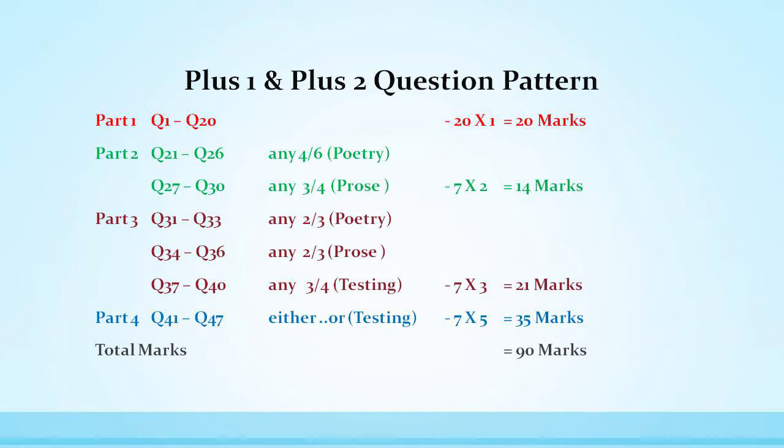Part 1, question 1 to question 20 which carries 1 mark each. Part 2, question 21 to question 30. You can answer 4 out of 6 for questions 21 to 26, and 3 out of 4 for questions 27 to 30. Totally 7 questions you have to answer in this part and each question carries 2 marks, therefore 14 marks.